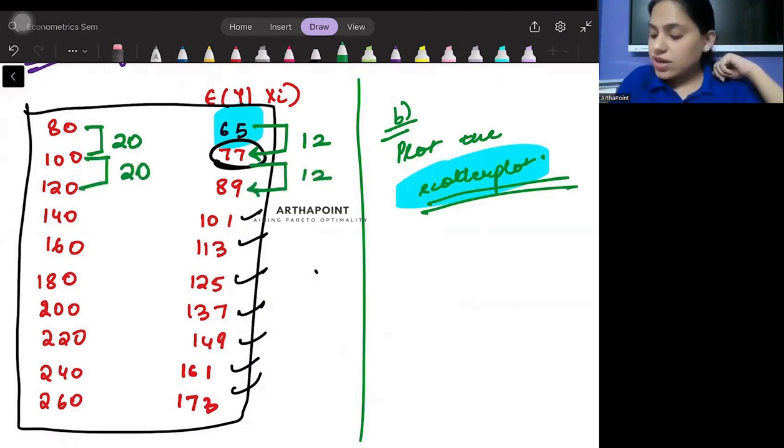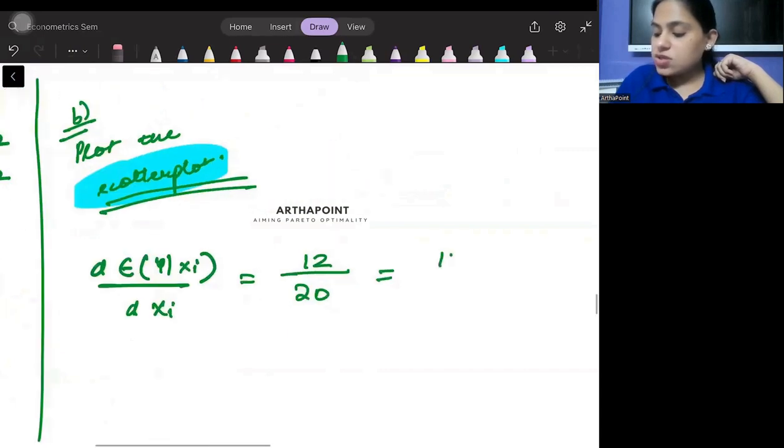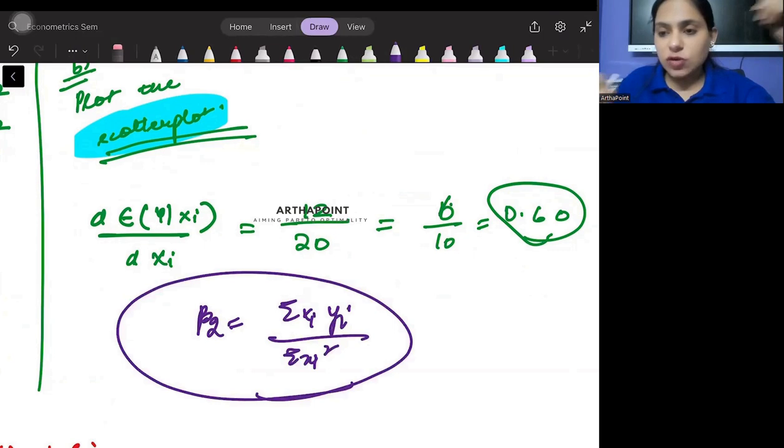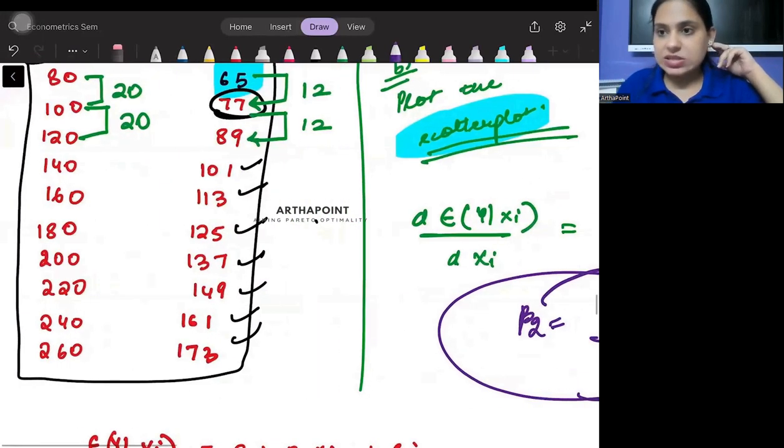Again you will notice this gap is again of 12 units and this is of 20 units. So clearly, if I were to find out d of e y given xi by d of xi, I can clearly find that always the expected value is changing by 12 and xi is changing by 20. So this is nothing but 6 by 10, so 0.60. I have actually, without going into that formula that beta 2 is summation xi yi by summation xi square, instead of doing this big thing altogether, I have just found beta 2 as 0.60.